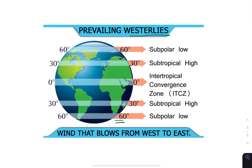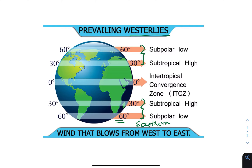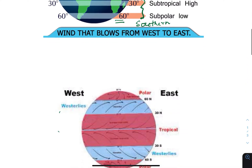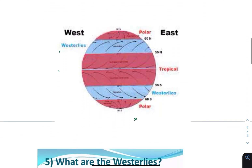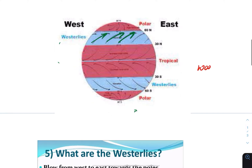The westerly winds, also known as the westerlies, occur at two regions on Earth: between 30 and 60 degrees latitude in the Northern Hemisphere and between 30 and 60 degrees latitude in the Southern Hemisphere. The name of these unique winds comes from the direction of their origin — the westerlies run west to east, while other winds run east to west.